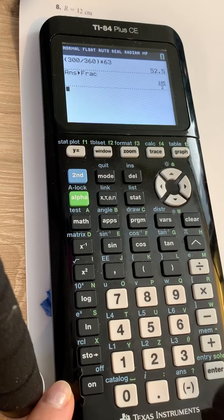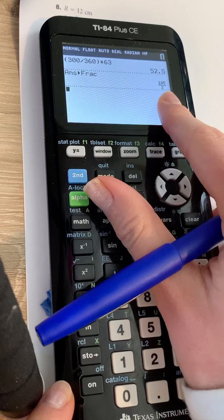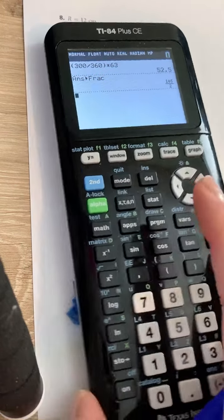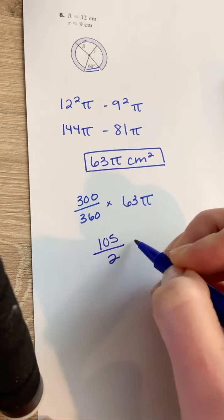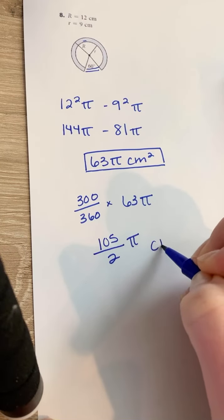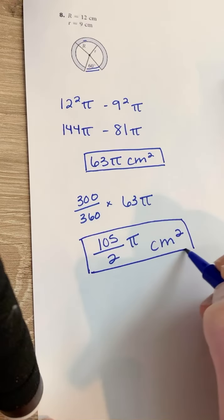Press enter and enter again, and it gives you the fraction, 105 over 2. So your answer will be 105 over 2 pi centimeters squared as your final answer.